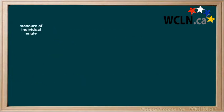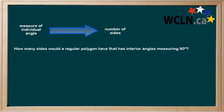If you know the measure of the individual angles of a regular polygon, you can also work the other direction to determine how many sides a polygon has. How many sides would a regular polygon have that has interior angles measuring 90 degrees?